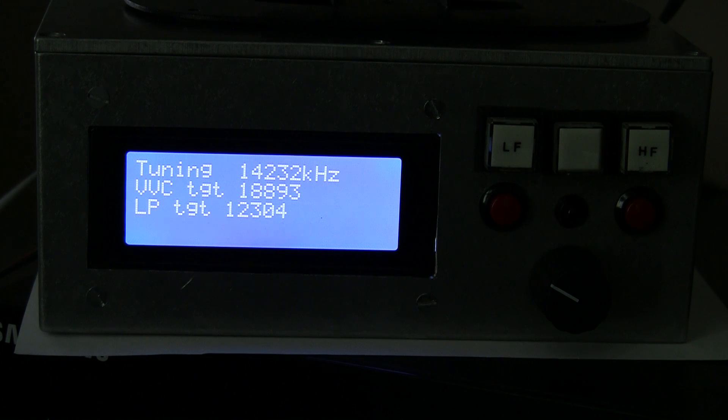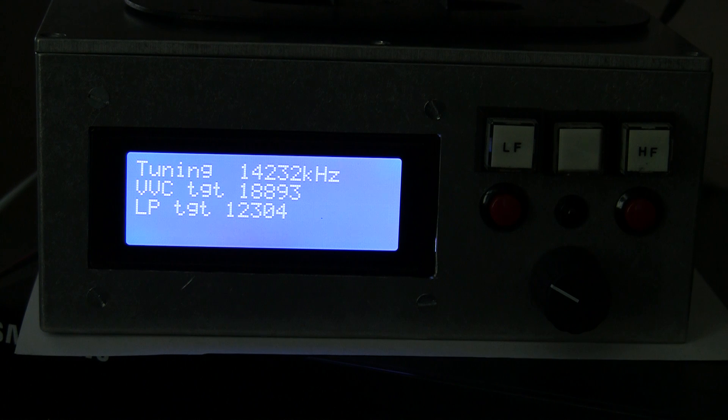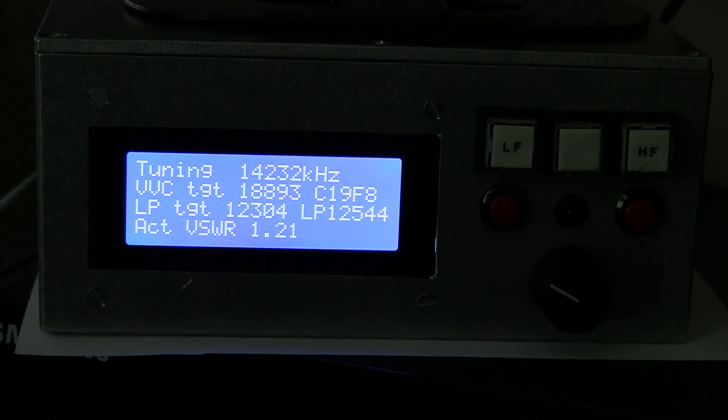There we go. 14.232, 8 kHz from what we measured. Those are the targets: 1883, 12.304. Here goes hunting. Coarse 19. Position. And fine. And the loop at position 12.544.